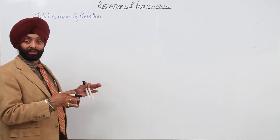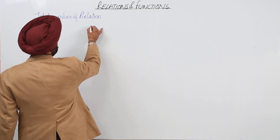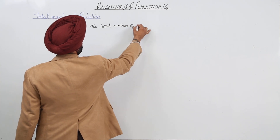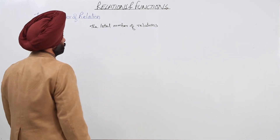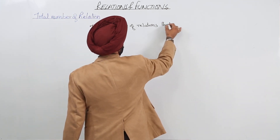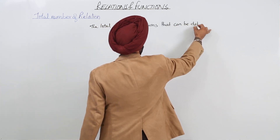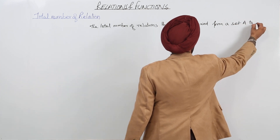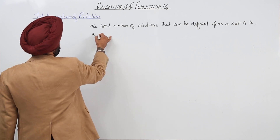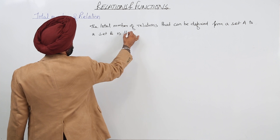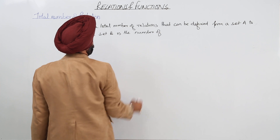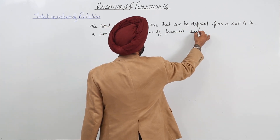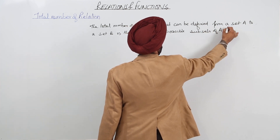Next is the total number of relations. If sets are given, then how to find the total number of relations? The total number of relations that can be defined from a set A to a set B is the number of possible subsets of A cross B.